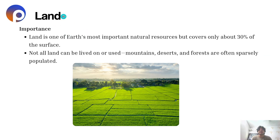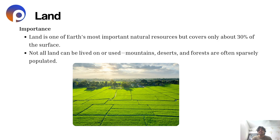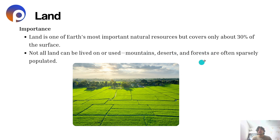Now let's see what is land. Land is one of earth's most important natural resources but covers only about 30% of the surface. The remaining 70% of the surface is covered with water. Not all land can be lived on or used — mountains, deserts and forests are often sparsely populated, with people scattered across these places.